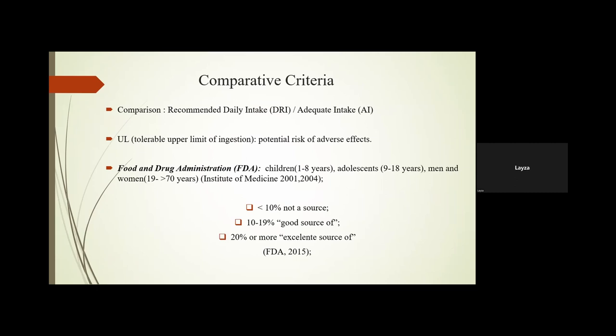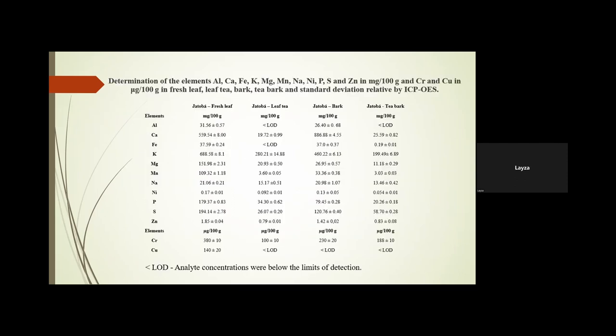Our comparison criteria was the recommended daily intake and the adequate intake. We also made a total rate upper limit of ingestion and compared with FDA values for children, adolescents, men, and women. The classification was: less than 10% — not a source; between 10 and 19% — a good source; and above 20% — an excellent source.